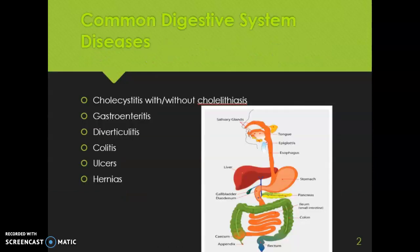Some of the common conditions you might see in the digestive system: first, cholecystitis, which is an inflammation of the gallbladder, and cholelithiasis is another name for gallstones. Gastroenteritis is an inflammation of the stomach and intestines. Diverticulitis is inflammation of the diverticula. Colitis is inflammation of the colon.